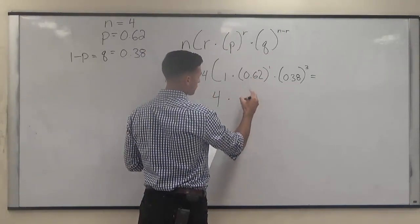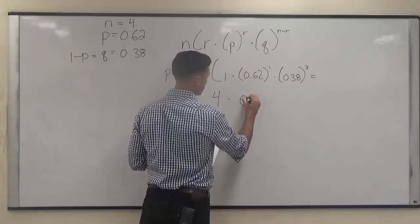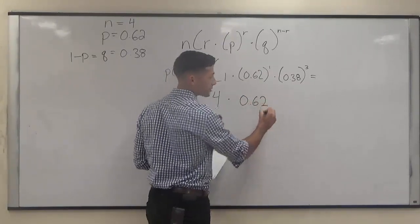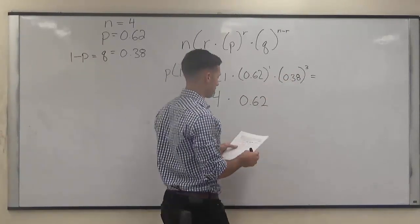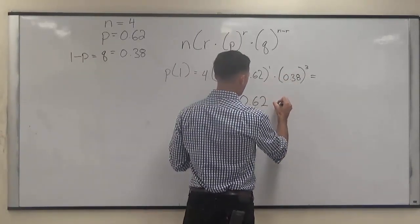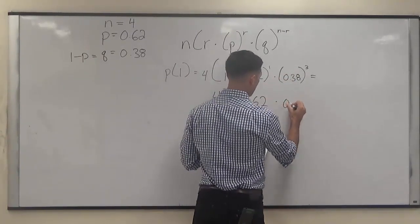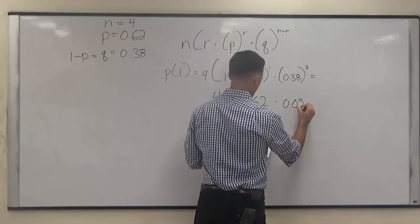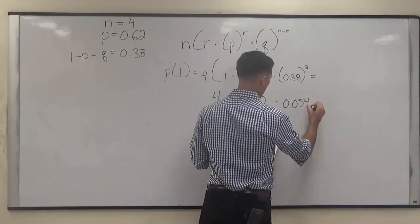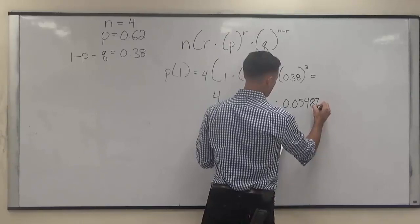0.62 to the first power is just going to be 0.62, and 0.38 to the third power is going to be 0.054872.